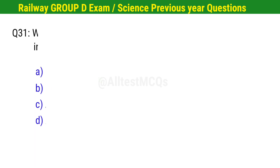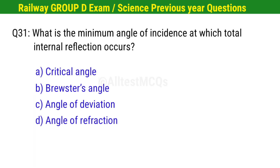Question No. 31. What is the minimum angle of incidence at which total internal reflection occurs? Correct option is A. Critical angle.